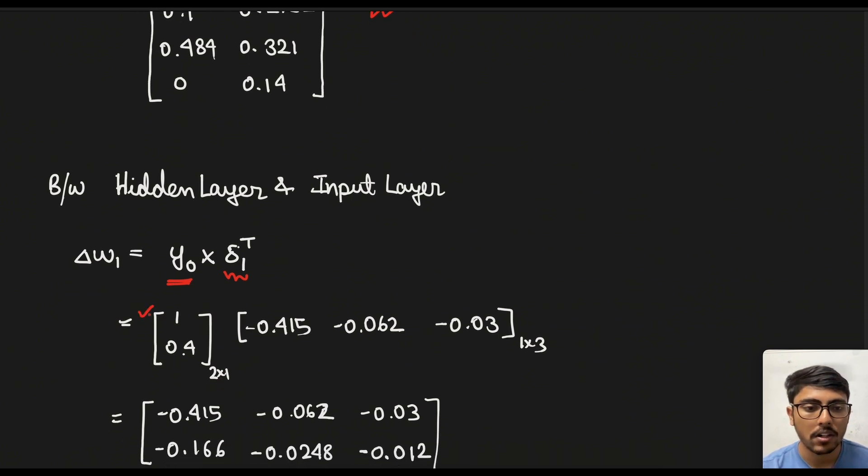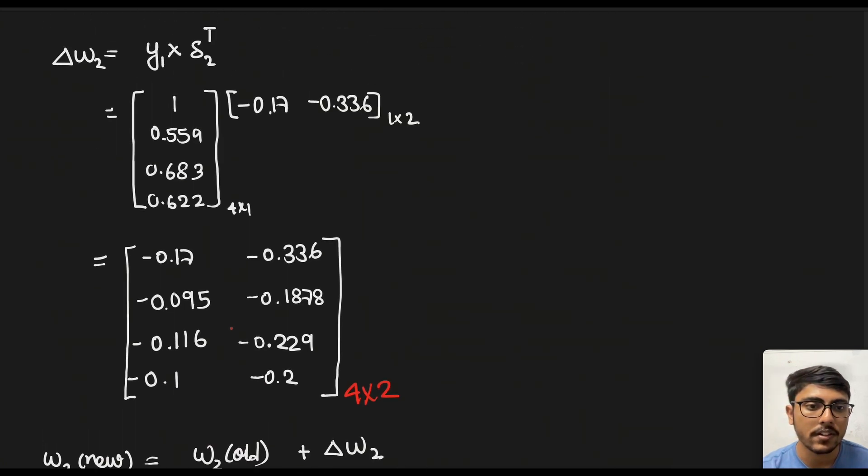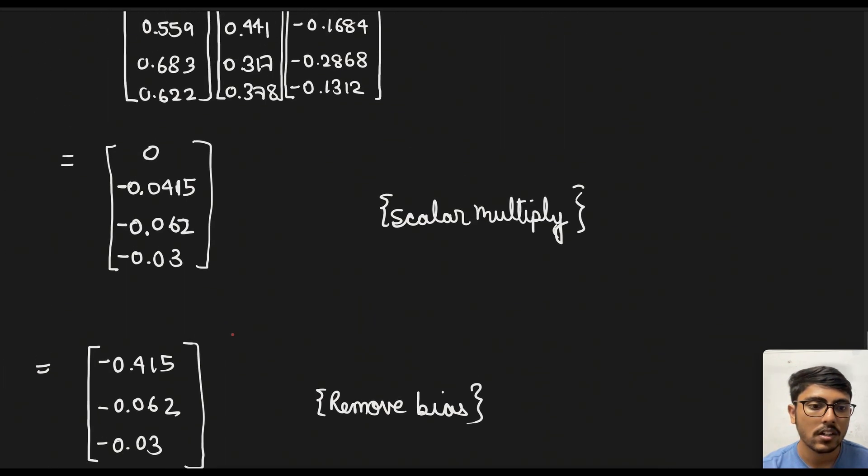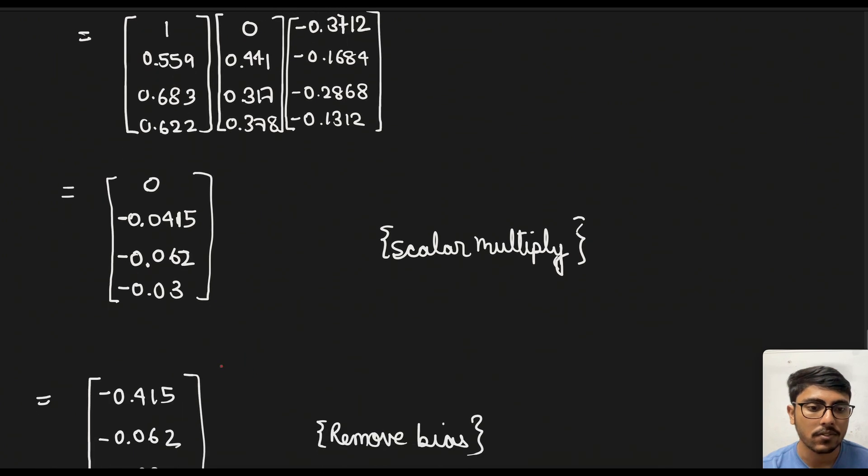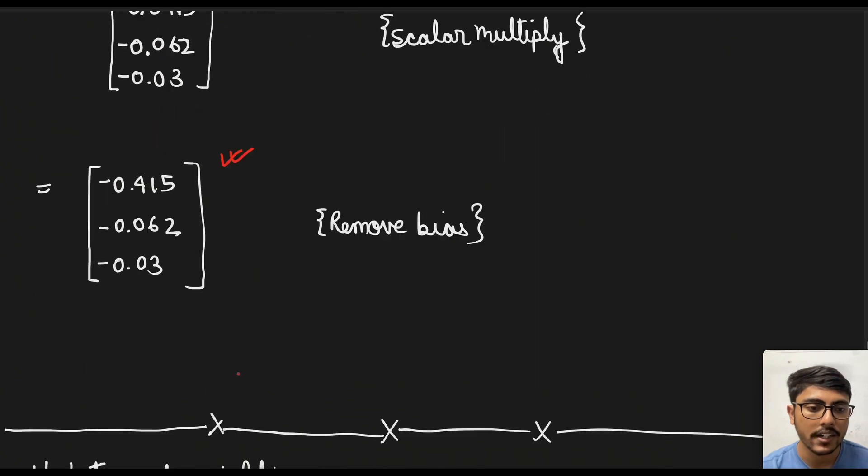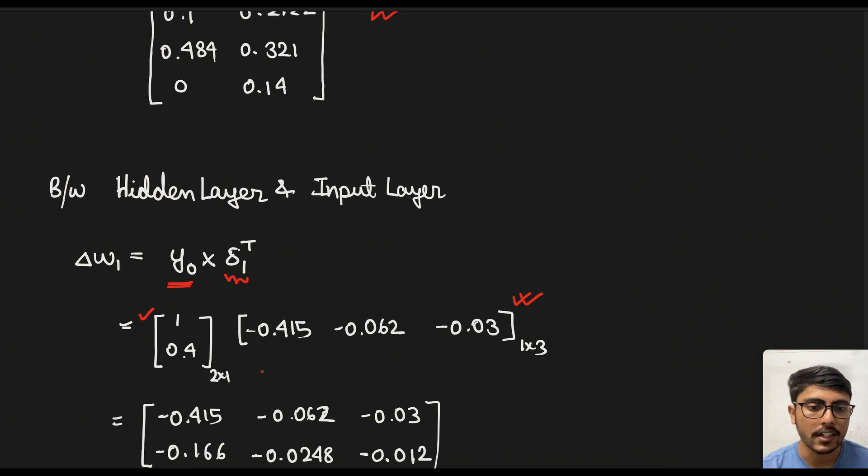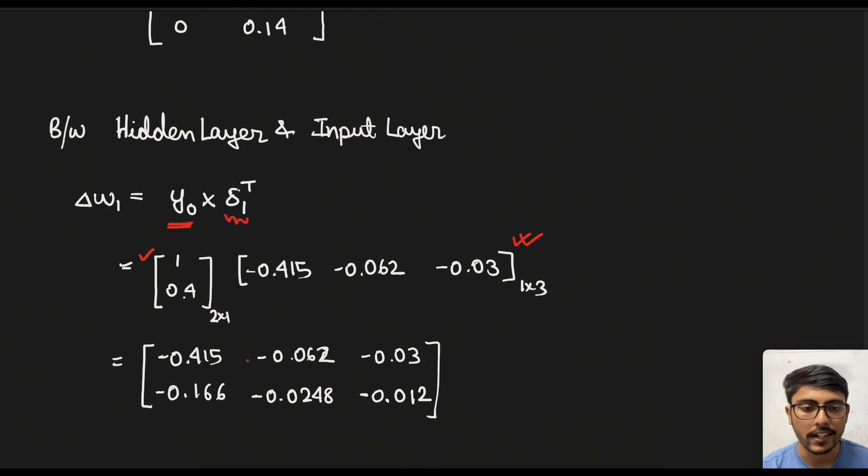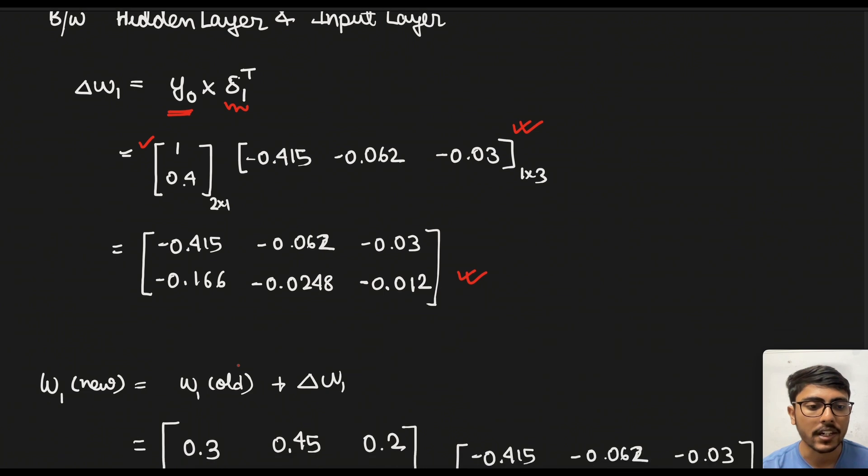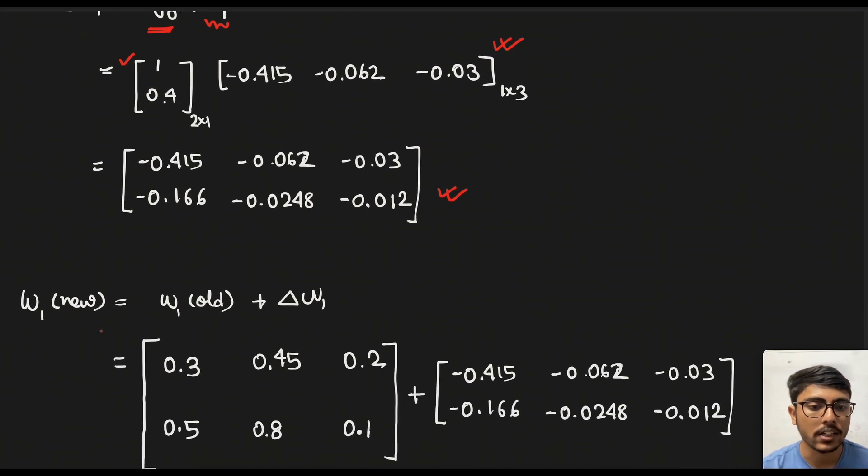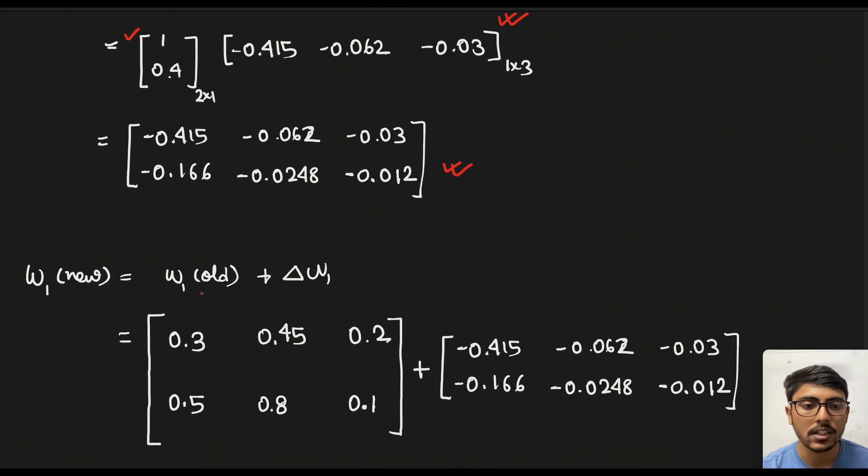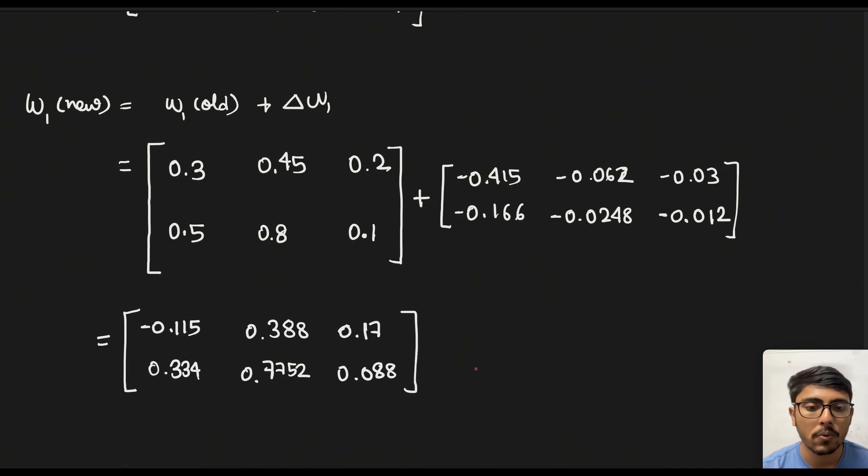So just simply taking the values from above. This is the input and this is the local gradient. If we go above you will find that this was the local gradient. So we just simply put that in transpose, simply put it and calculate it. Now we actually update the weight which is w1 old plus the delta that we just calculated. And if we multiply those two we get the new weights.